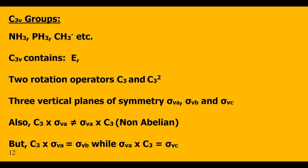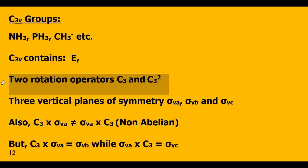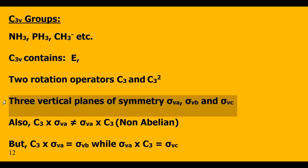The examples of C3V point group are ammonia, phosphine, Ca3 minus ion, etc. In addition to the identity element E, the C3V point group contains two rotational operators, C3 and C3 squared. Moreover, it also contains three vertical planes of symmetry, which we may label as sigma VA, sigma VB, and sigma VC.